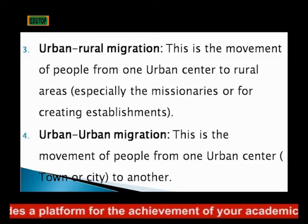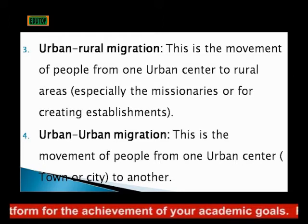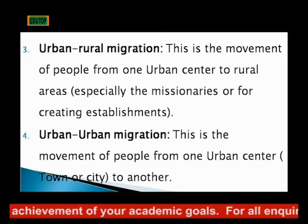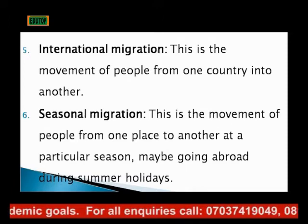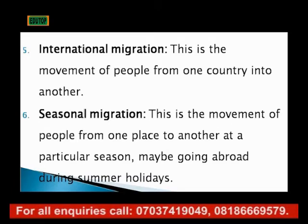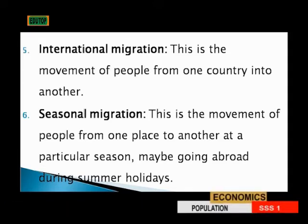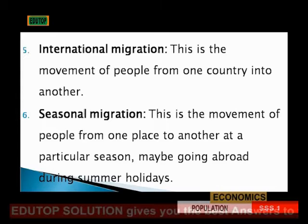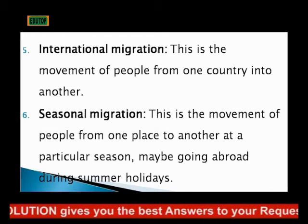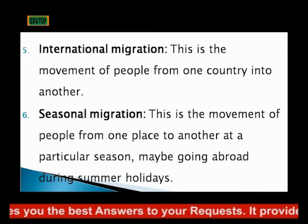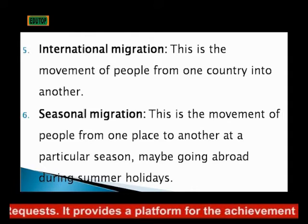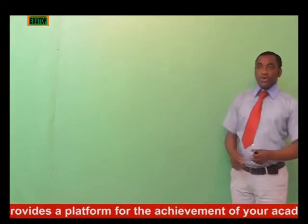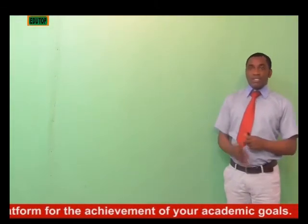Four, we have urban-to-urban migration, which is the movement of people from one urban center to another, maybe in search of better opportunities. Number five, we have international migration, which is the movement of people from one country into another. And the last one, we have seasonal migration, which is the movement of people from one place to another at a particular season of the year, such as going abroad during summer or during Christmas.